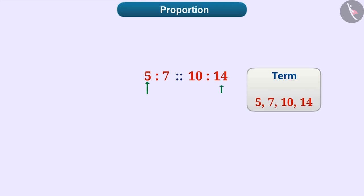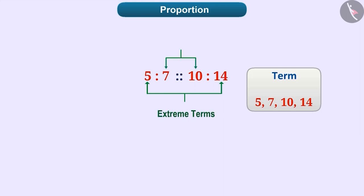The first and the last terms among these terms are called extreme terms. For instance, in the given proportion, 5 and 14 are extreme terms. Similarly, the second and the third terms among these terms are called middle terms. For instance, in the given proportion, 7 and 10 are middle terms.